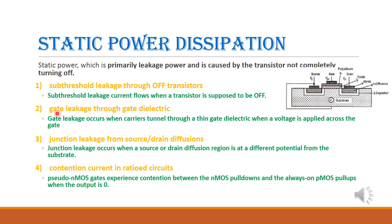The second cause is gate leakage through gate dielectric. In the gate, there is polysilicon; below that we have gate oxide, which is an insulating material; and below that we have the substrate. This structure acts as a parallel plate capacitor — the gate polysilicon is one plate, the substrate is the other, and the gate oxide is in between. Depending on the thickness of the gate oxide, charges will tunnel through it. If the gate oxide is very thin, more charges will tunnel through, causing gate leakage through the gate dielectric.